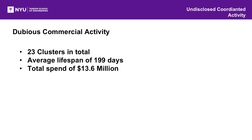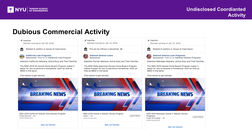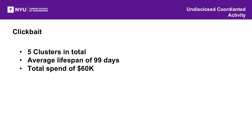We also found a surprising amount of dubious commercial activity — scammy loan offerings, fake health insurance, overpriced investment products. We found 23 clusters of this type with a total spend of $13.6 million and an average lifespan of 199 days. These are scammy loan offerings aimed at people based on their veteran status or tailored to each state. And of course, we found some clickbait, though interestingly we only found that in the early part of the study period. We hypothesize that Facebook took action against these advertisers and has been successful at preventing their activity. These advertisers had the shortest average lifespan of only 99 days and by far the lowest total spend of only $60,000.